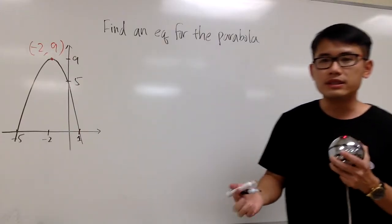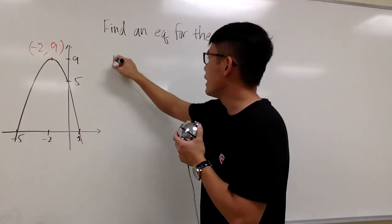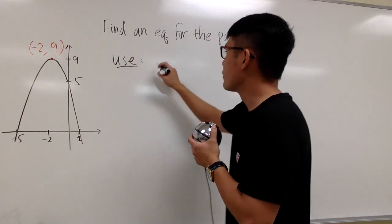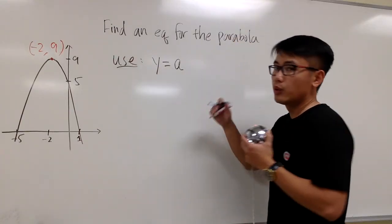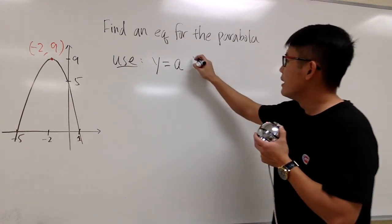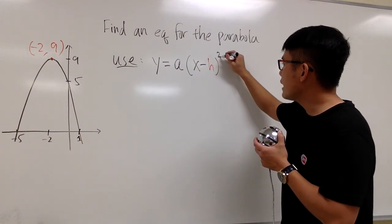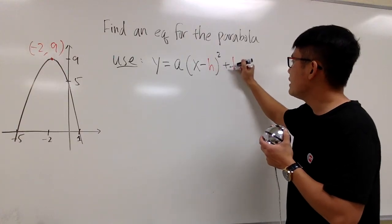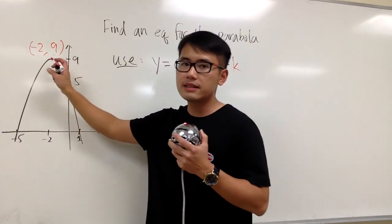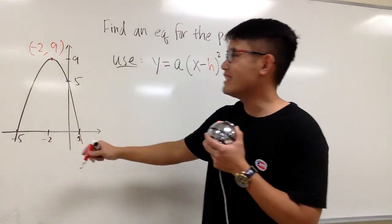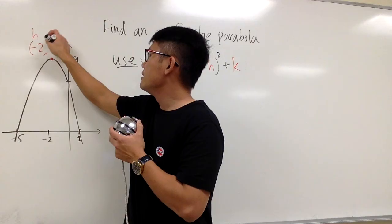I'm going to start off with the vertex form of this parabola. We are going to use the form that y is equal to a — we don't know what it is yet — times the parentheses, x minus h, and square that, and we add a k at the end. When we have the vertex, in this case it's the highest point, this is the h value, and this is the k value.